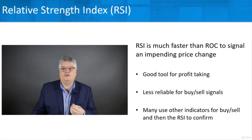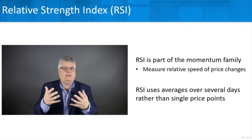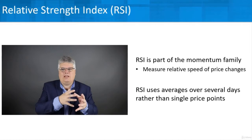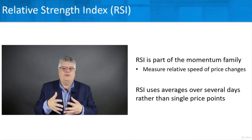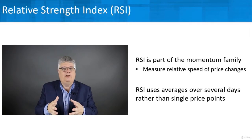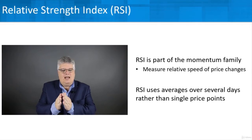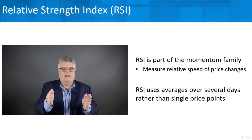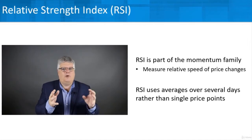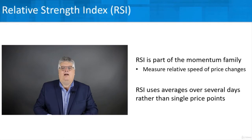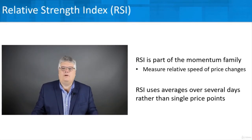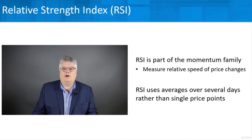RSI is part of the momentum family, so it looks at the relative speed of price changes — how prices are accelerating or decelerating. The difference is it uses averages over several days rather than a single price point. From the traditional ROC lesson, a 10-day momentum looks back at just that one price 10 days ago and doesn't care about what happens in between. RSI uses averages over that period, which helps it be more sensitive and faster-acting than traditional ROC.